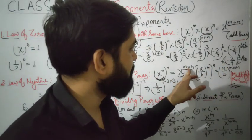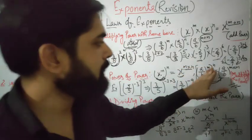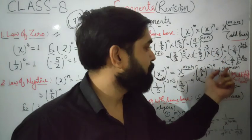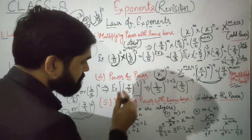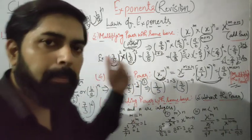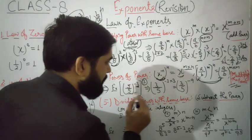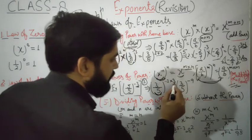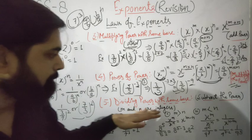The rule is: x to the power m, raised to the power n, equals x to the power m times n. In fraction form, a upon b raised to the power m, raised to the whole power n, equals a upon b raised to the power m times n. Example: 3 upon 5 raised to the power minus 3, raised to the power 3 — multiply the powers: minus 3 times 3 equals minus 9. Answer: 3 upon 5 raised to the power minus 9.